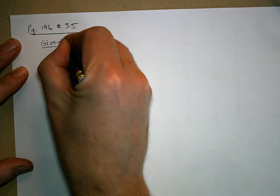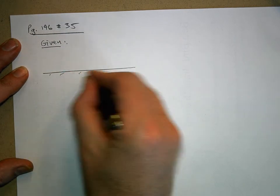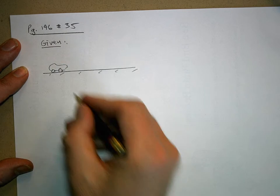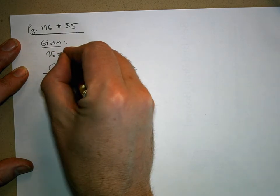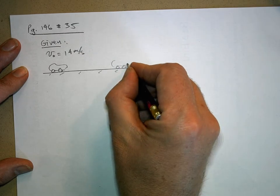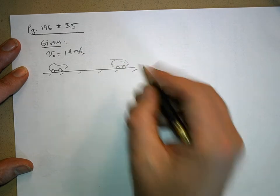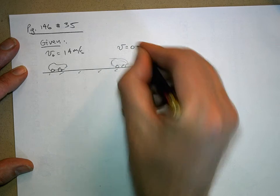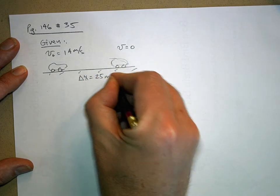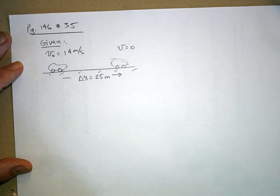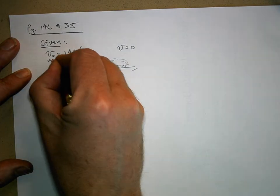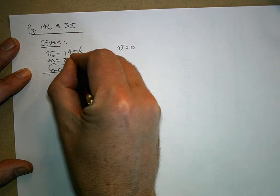So given, here's the icy road, here's your car. Your initial velocity is 14 meters per second. Here you are hopefully stopped. Here's your car that stopped. Your velocity is equal to zero. Delta X here was 25 meters. And the mass of this car is 2,500 kilograms.